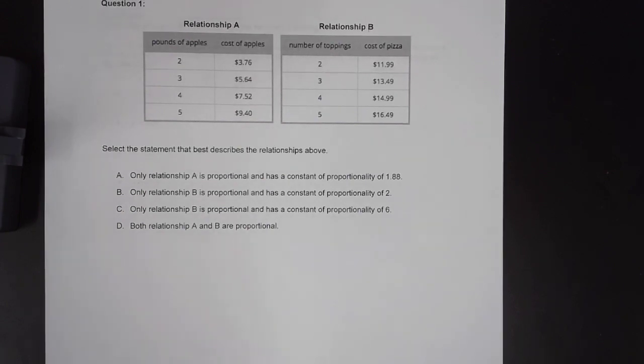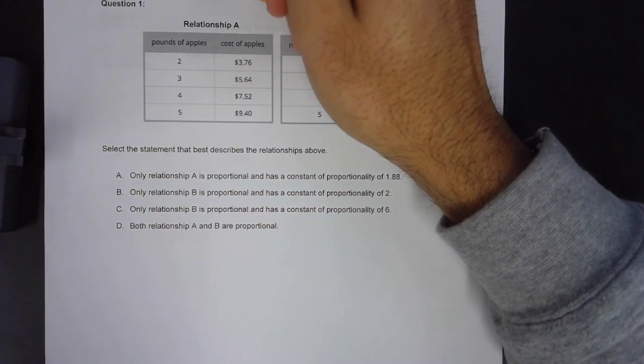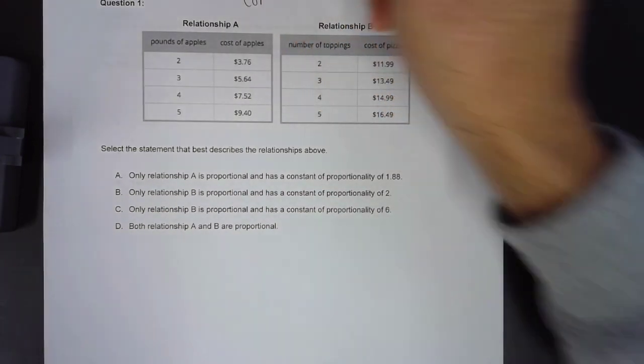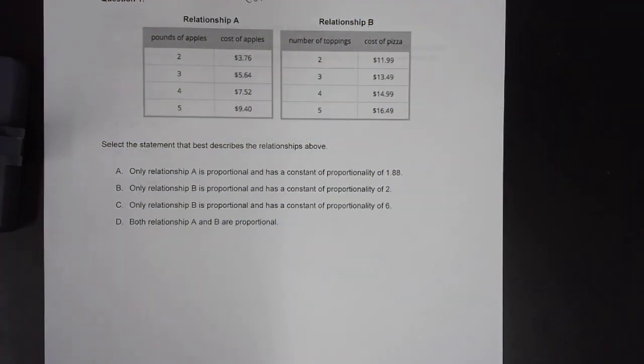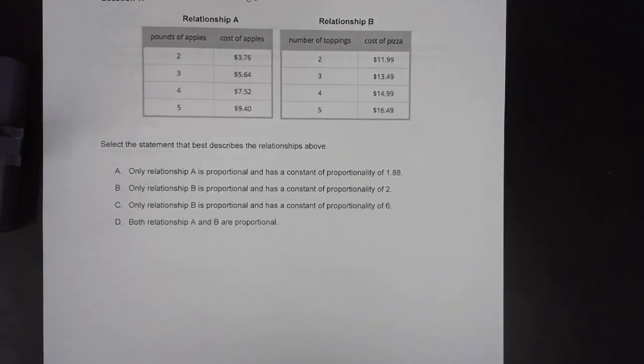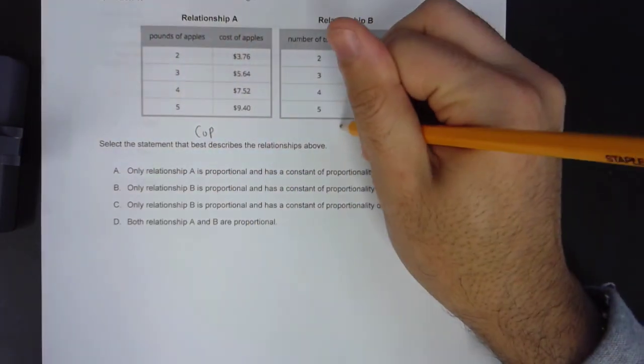Of course, for a relationship to be proportional, there must be a constant of proportionality. Constant of proportionality is how to get from X to Y every single time. So in order for these tables to be proportional, there has to be a constant of proportionality, which we will determine shortly.